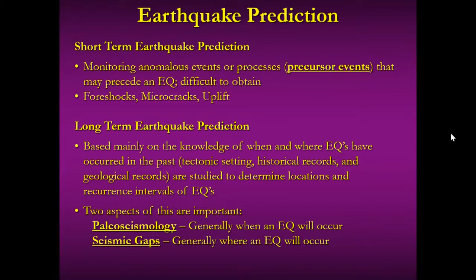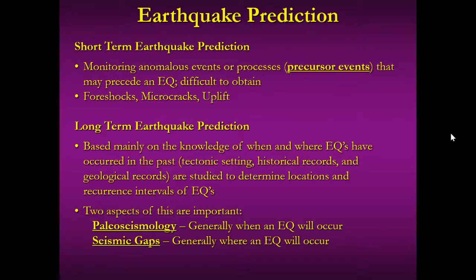As for predicting earthquakes, short-term prediction is difficult. There are precursor events that occur right before an earthquake — things like foreshocks, ground cracking, and uplift. Measurements are taken for those, but not a lot of headway has been gained in short-term prediction. There are two methods of longer-term prediction: paleoseismology and seismic gaps. Paleoseismology gives us a general sense of when an earthquake might occur based on frequency, while seismic gaps tell us generally where an earthquake would occur.